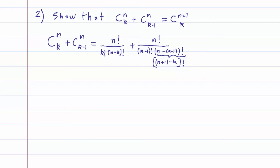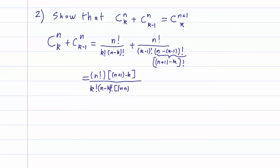So we are going to try to have the same denominator at the bottom, and let's start with the first term. Instead of having n minus k, I want n plus 1 minus k. So I'm going to multiply the top and the bottom by n plus 1 minus k. That gives us k factorial times n minus k factorial times (n plus 1 minus k), and since a factorial times the next level gives us the next factorial, we can rewrite this as n plus 1 minus k factorial.